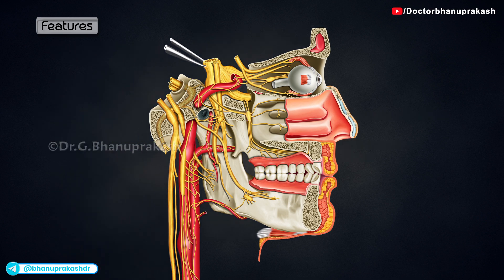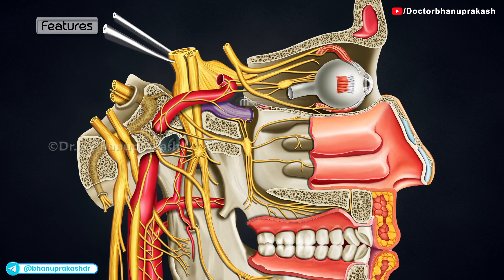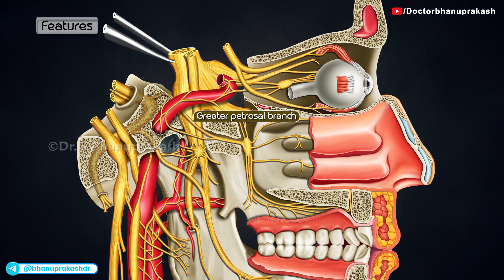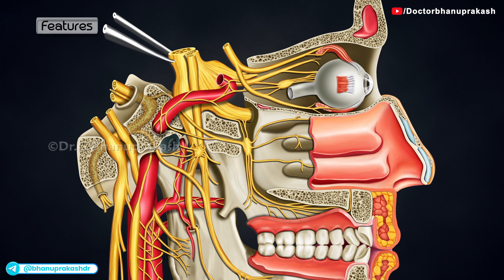Topographically, it is related to the maxillary nerve, but functionally it is connected to the facial nerve through its greater petrosal branch. The flattened ganglion lies in the pterygopalatine fossa just below the maxillary nerve, in front of the pterygoid canal.